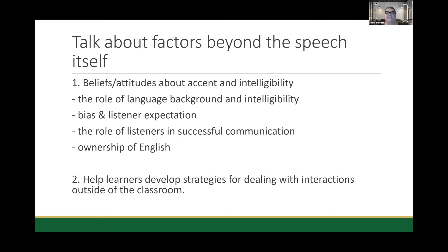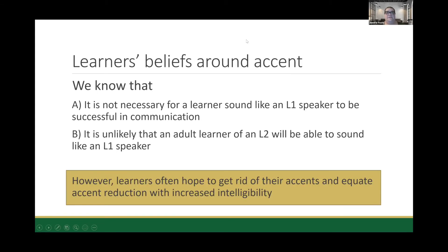In terms of learner beliefs around accents, we know from research — going back to the intelligibility principle — that it is not necessary for a learner to sound just like a first language speaker to be successful in communication. Accent and comprehensibility and intelligibility are not the same thing. If a person is rated as not very comprehensible or intelligible, they will likely also have a heavy accent, but the reverse isn't necessarily true. There are lots of examples of people with very noticeable accents who are very easy to understand. And as mentioned, it is unlikely that an adult learner of a second language will be able to sound like a first language speaker.